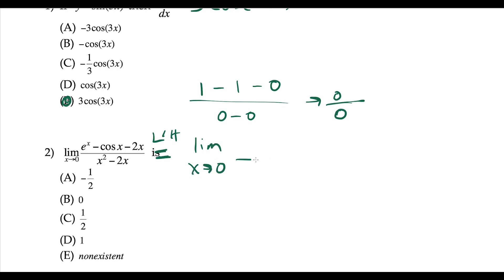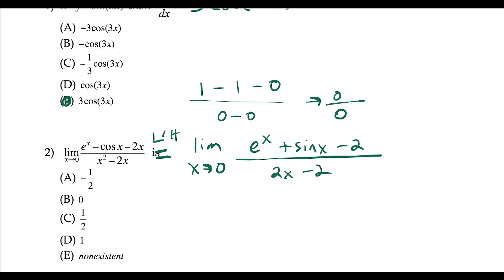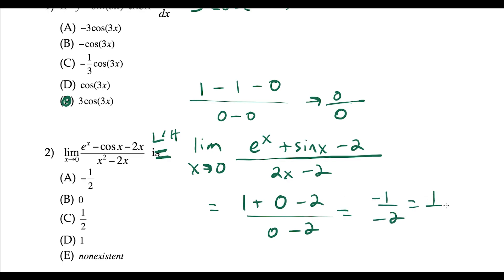Remember, doing L'Hôpital is like doing the quotient rule the wrong way. The derivative of e to the x is e to the x. The derivative of minus cosine goes to plus sine, and the derivative of minus 2x is minus 2. On the bottom we have 2x minus 2. Plugging in 0: e to the 0 is 1, plus sine of 0 is 0, minus 2, over 0 minus 2 — that's negative 1 over negative 2, which is positive one half. So this is choice C.